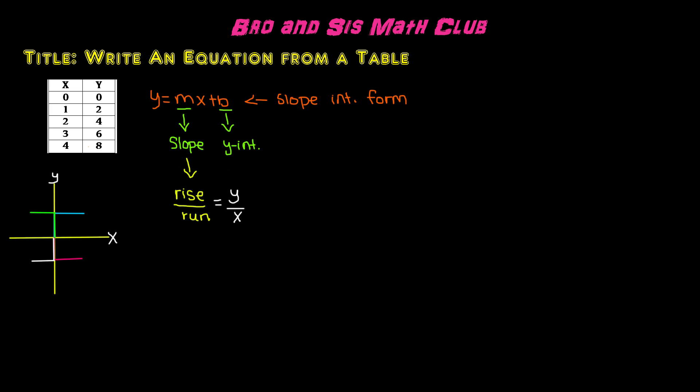In order to find the slope, we need to examine our table of values. Here we have the x-values, and here we have the y-values. As you can see, in the x-values, it increases by 1 each time. And in the y-values, it increases by 2.